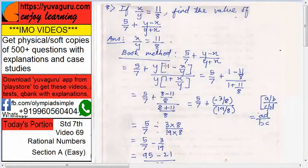Here, there are two methods. One is the method given in the books. I will give you that first. x upon y equals 11 upon 8. So, 5 upon 7 plus y minus x upon y plus x equals to, what we do is, take y common from both.